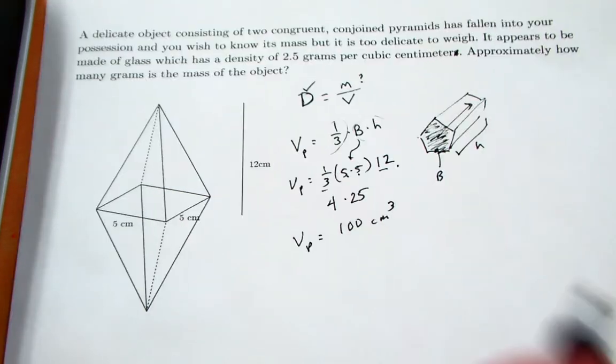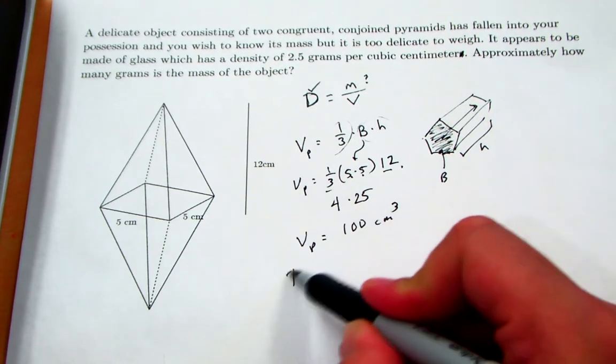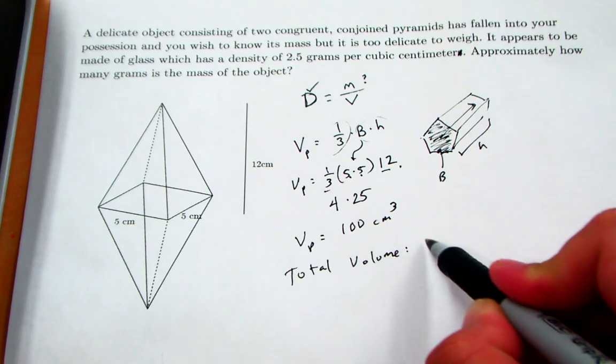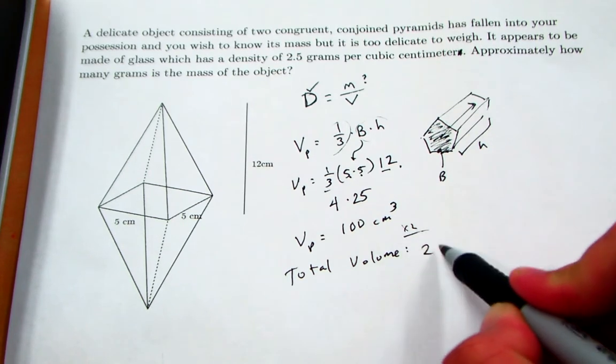The other pyramid, of course, you'll notice is congruent. So the total volume therefore would just be times two, 200 cubic centimeters.